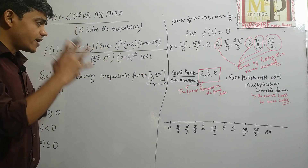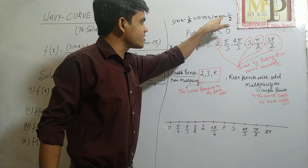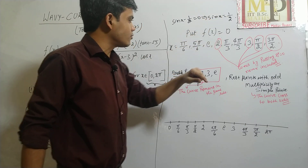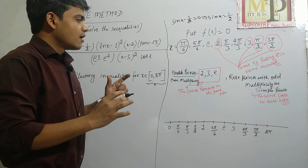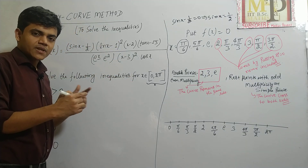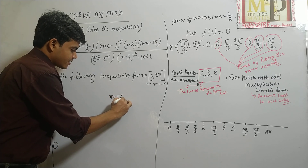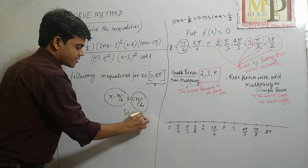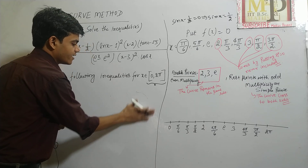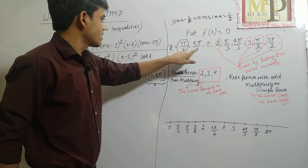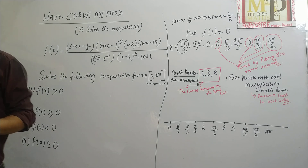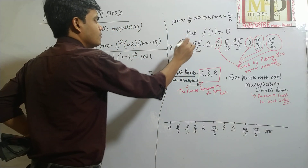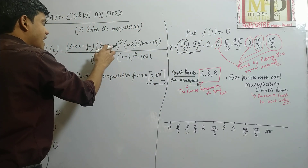Setting sin x − 1/2 = 0 gives sin x = 1/2. In the interval 0 to 2π, sin x = 1/2 at x = π/6 and x = 5π/6. These two roots come from sin x = 1/2. Now, ln(x − 1) = 0 means ln x = 1, which gives x = e.